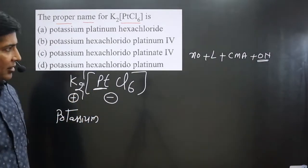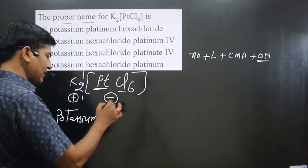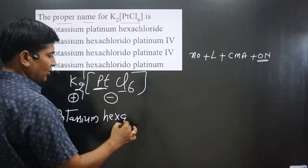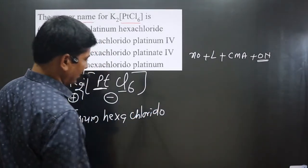Then we have the anionic complex. In this case, only one type of ligand is there - six is there, so we write it as hexa. Then we have ligand, so halogen is there. This is chlorido. Chlorine, we name it as chlorido.